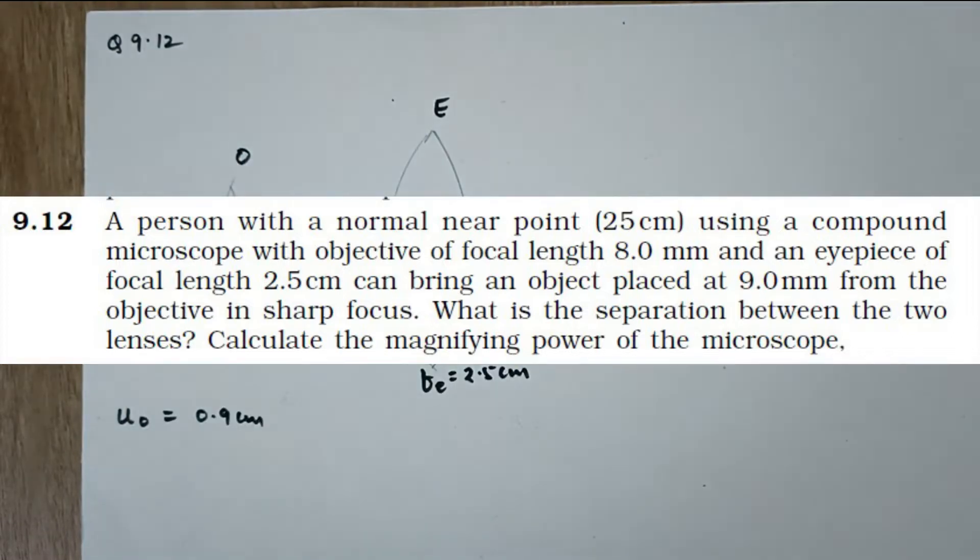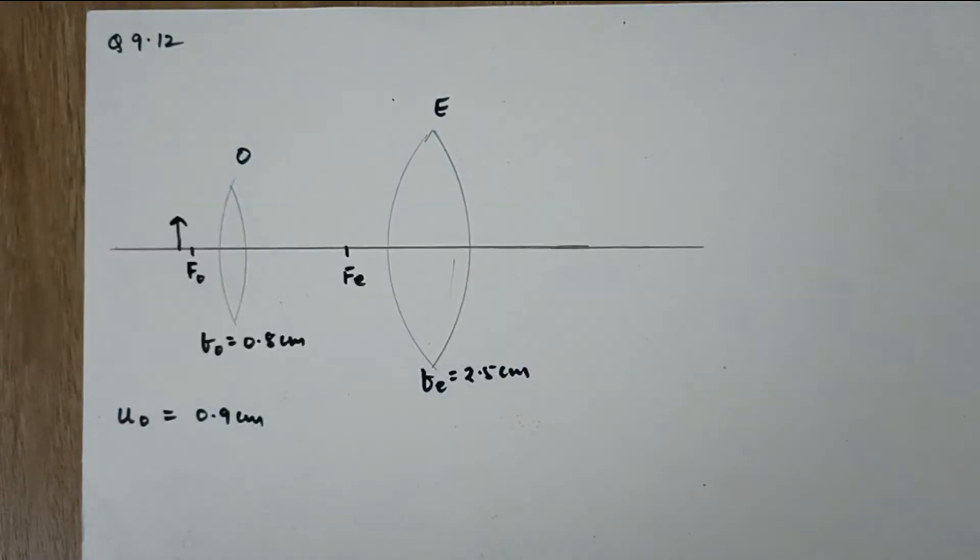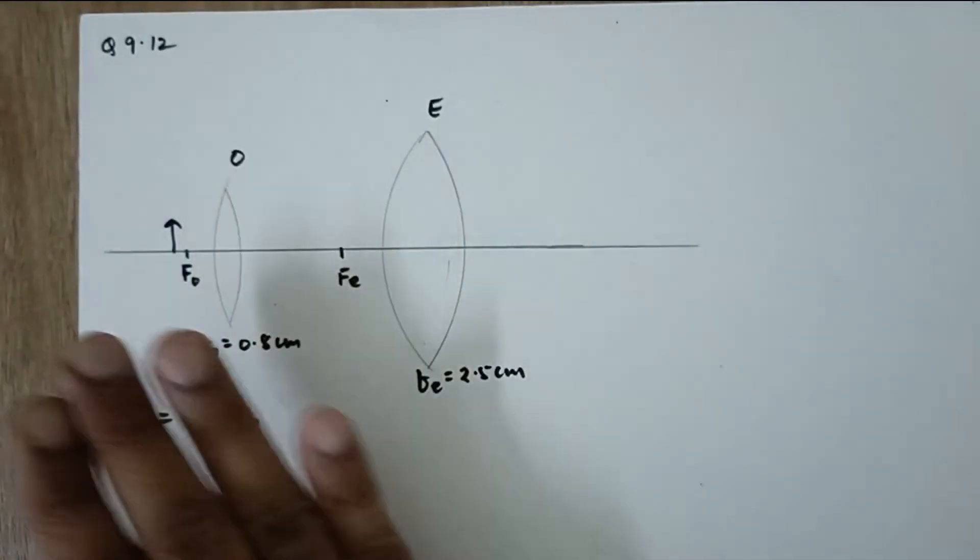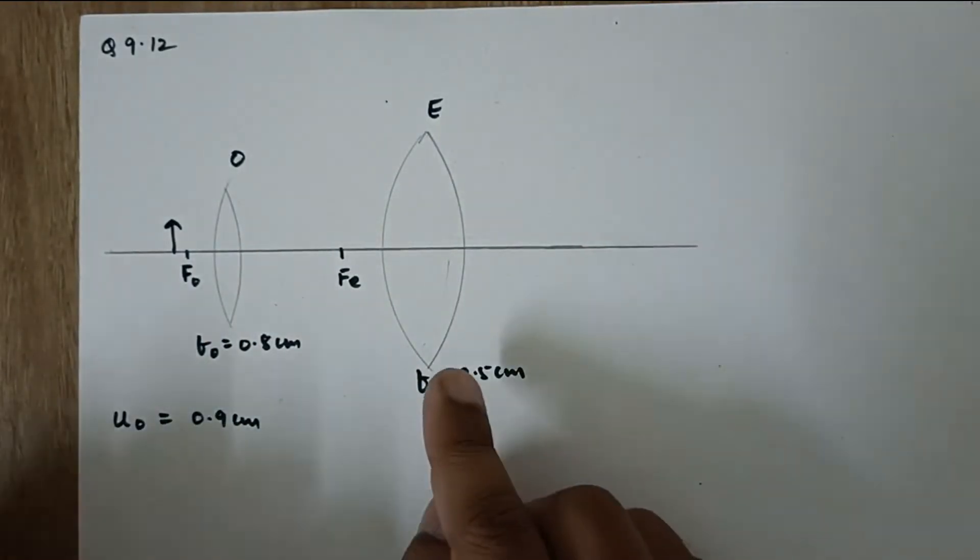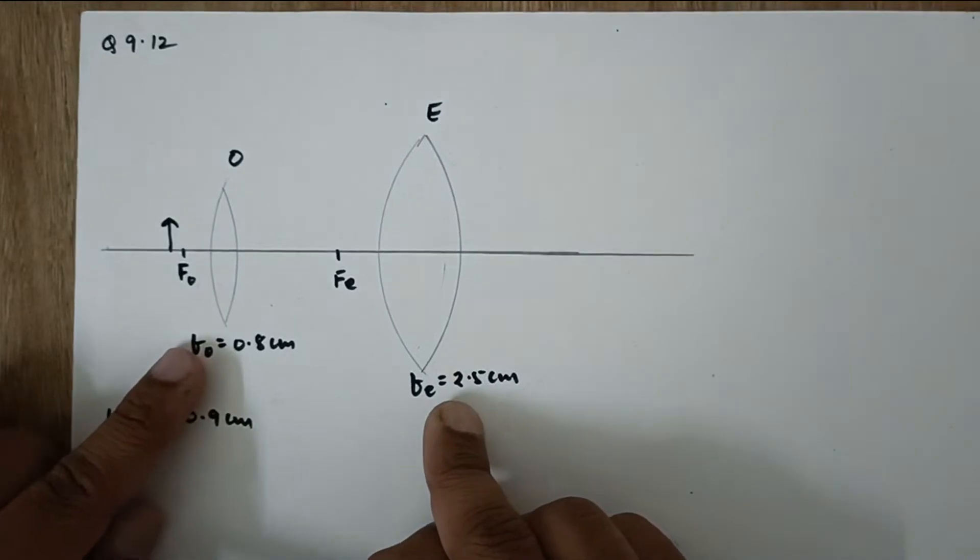Let's solve problem number 9.12, standard 12 physics ray optics. So we have a compound microscope over here. Focal length of both of them are given.